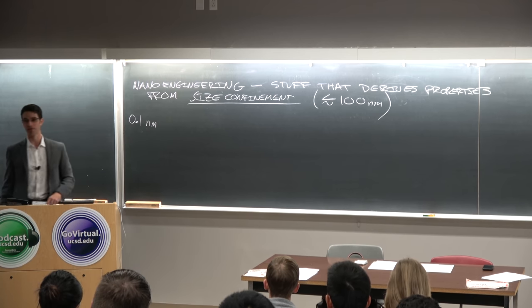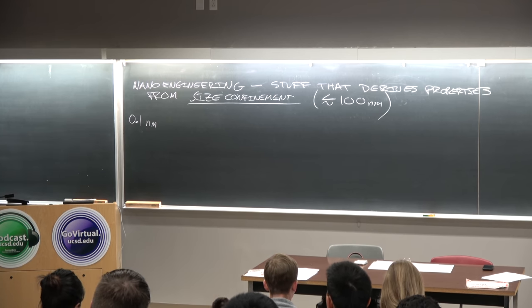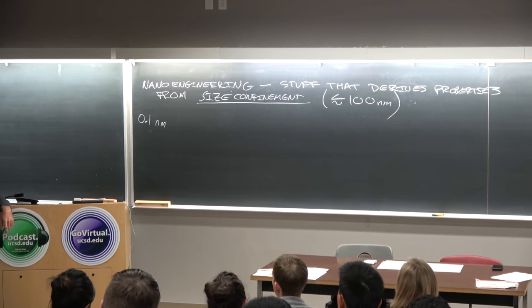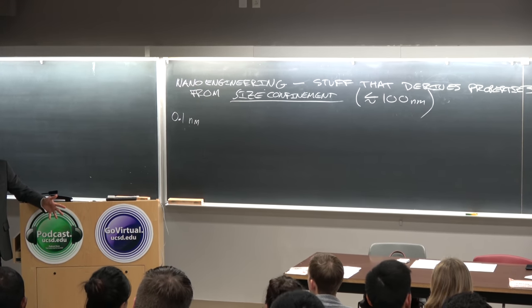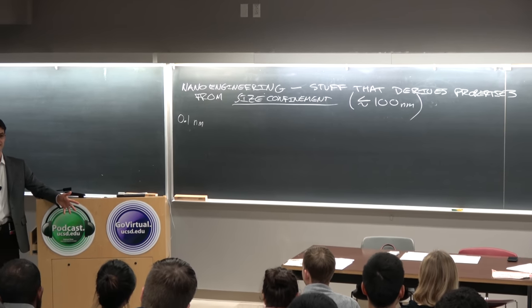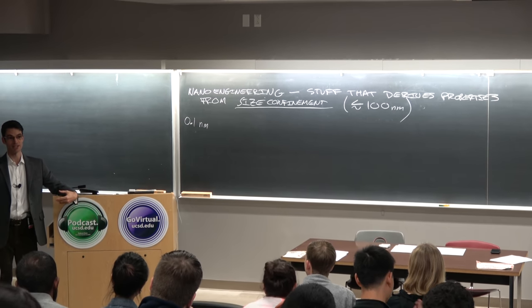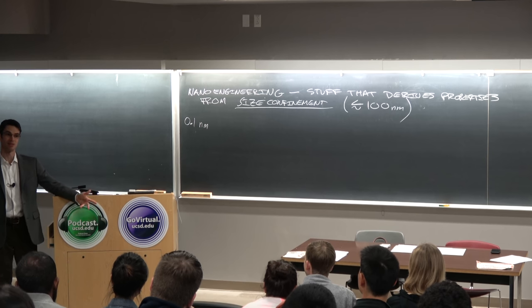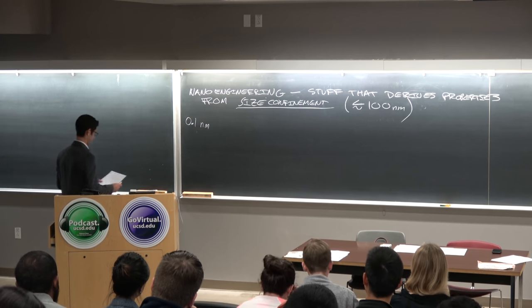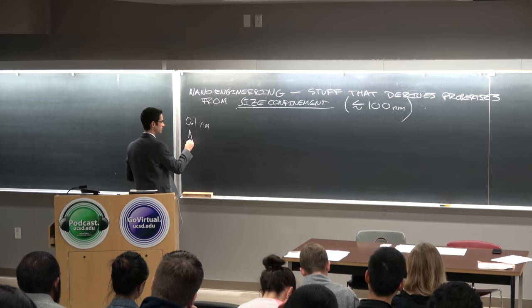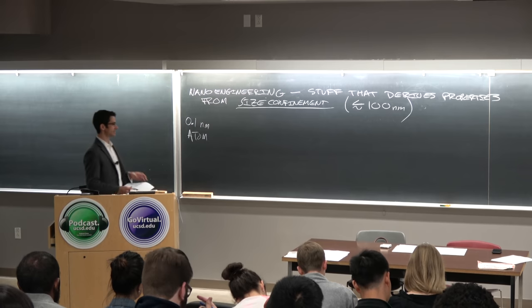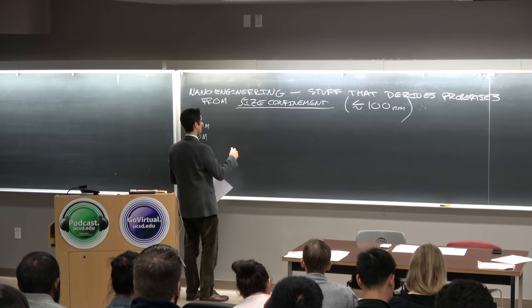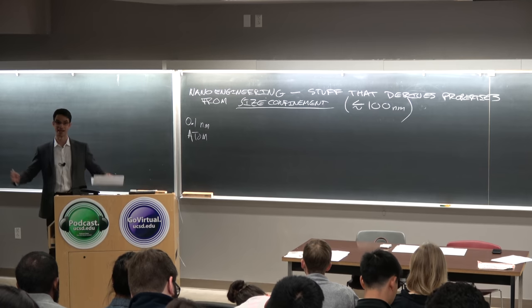0.1 nanometers. One time I went to a talk on nanoscience and the seminar speaker used the word nanometers instead of nanometers. And it was my impression that they put the emphasis on the wrong syllable. Nanometers, nanometers, all the same thing. 0.1 nanometers is an angstrom. That's like the characteristic size diameter of a hydrogen atom.